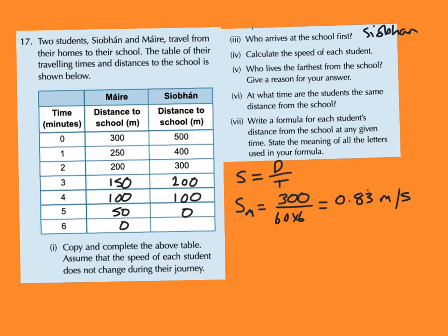We only have two types of speeds: kilometers per hour and meters per second. The speed of Siobhan: she was 500 meters from school and it took her 5 minutes. Again, multiply 5 by 60 seconds, giving 300 seconds. So 500 divided by 300 gives 1.6 meters per second.